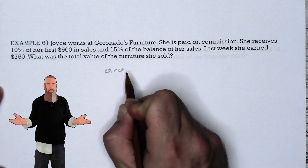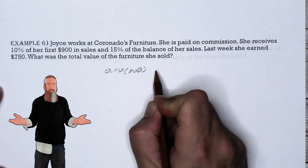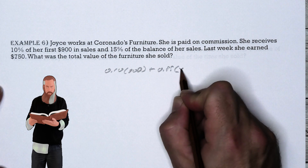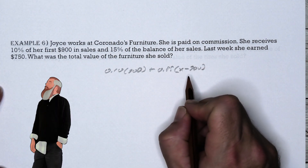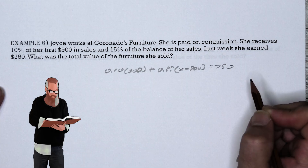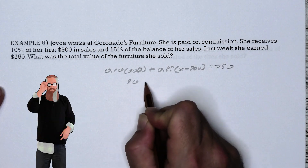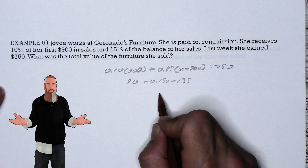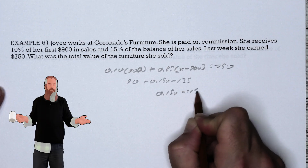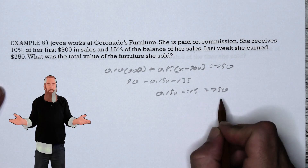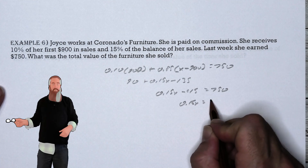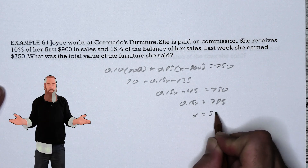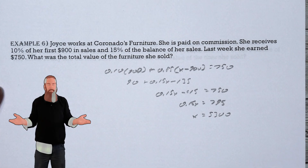We let x represent the total value of the furniture. She receives 10% (0.10) of $900, plus 15% of everything over $900, which is 0.15(x − 900). She earned $750, so: 90 + 0.15x − 135 = 750. Combining terms: 0.15x − 45 = 750, so 0.15x = 795, and x = 5,300. Joyce sold $5,300 worth of furniture last week.